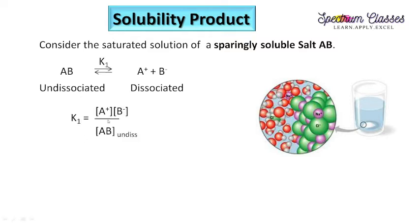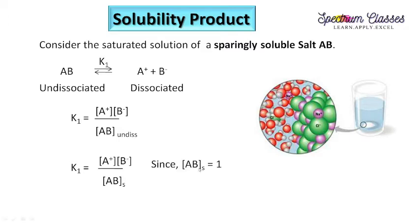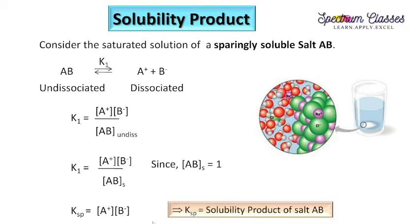This equilibrium constant K1 equals the products on the right-hand side divided by the reactant. On the right-hand side we have [A⁺] and [B⁻], and on the left-hand side we have undissociated salt AB. Since AB is in solid form, its concentration equals 1. Substituting this, the equilibrium constant becomes the solubility product: KSP = [A⁺][B⁻]. This KSP is known as the solubility product of salt AB, and [A⁺][B⁻] is termed the ionic product.